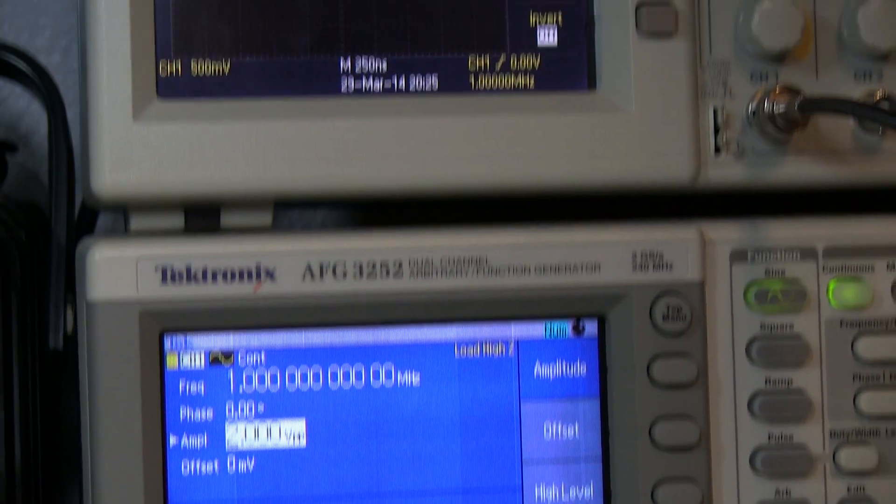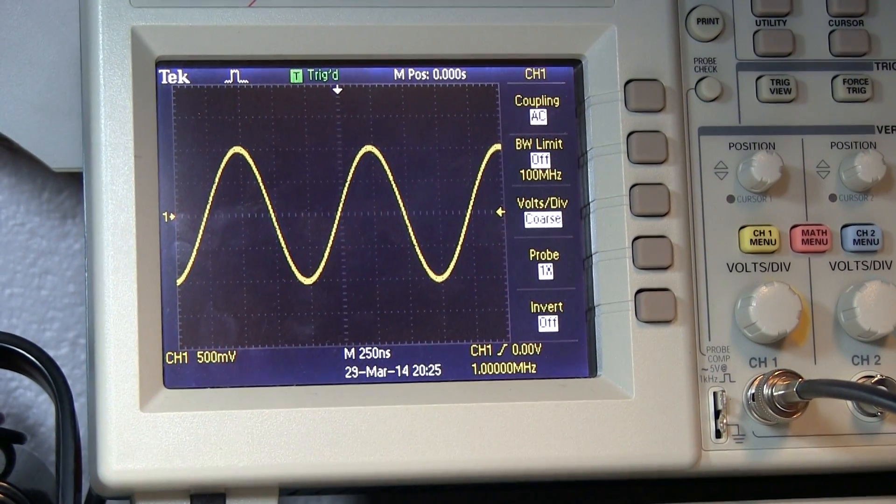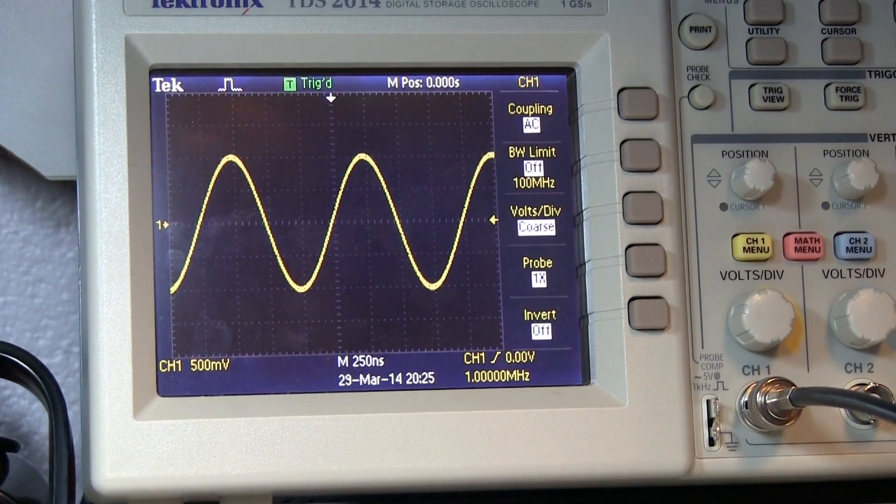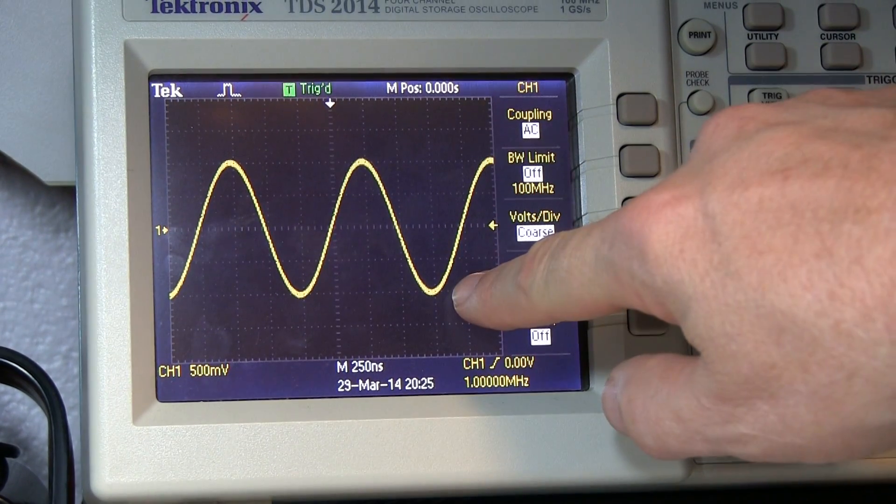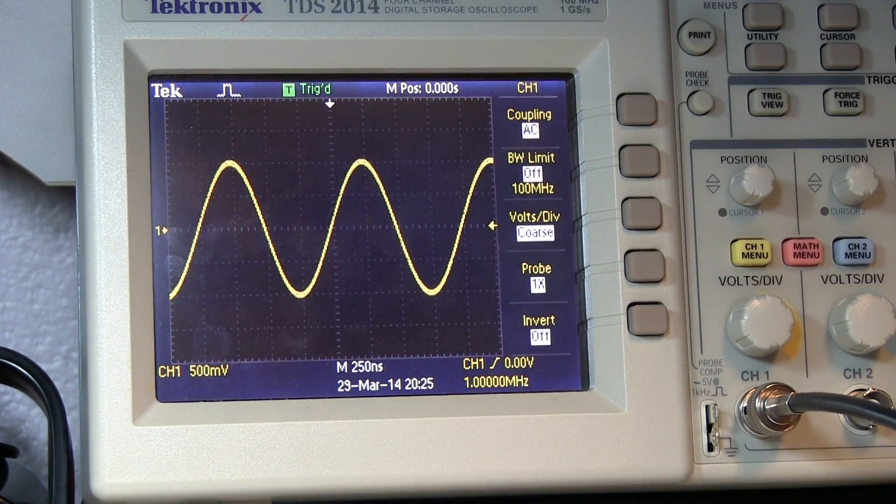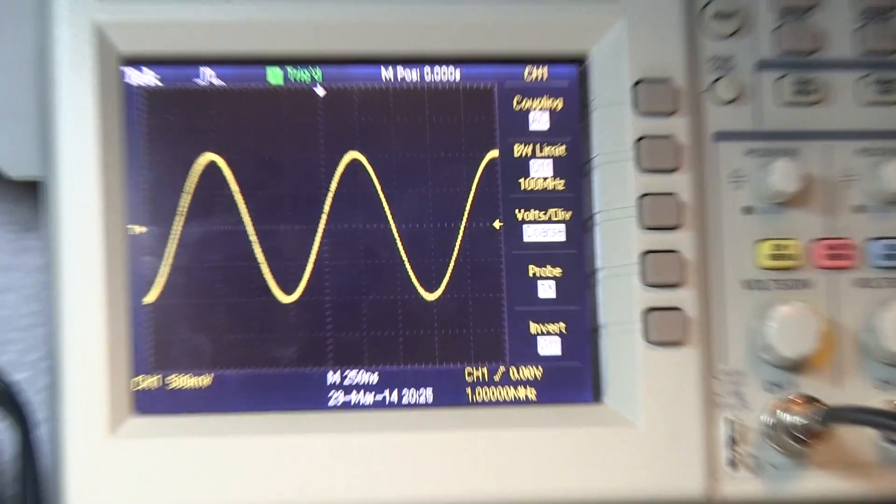Because it knows that two volts peak to peak is what we're going to wind up with in that high impedance load. And we look back up at the scope screen, okay, we've got the same situation that we had before. It's two volts peak to peak, but now it does match what the function generator was giving us in its display.